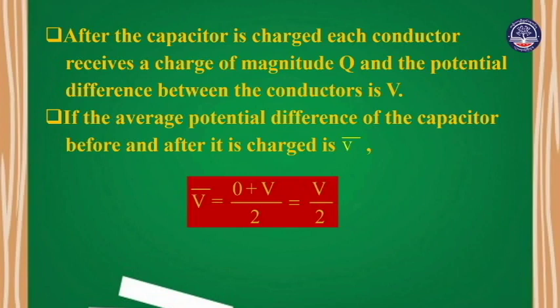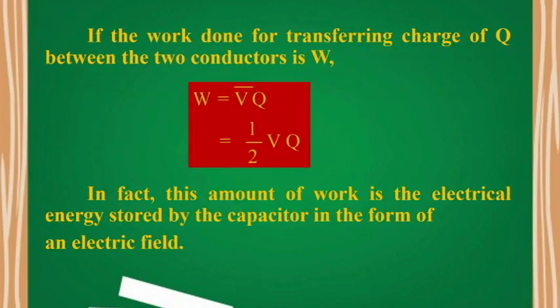The average potential difference is equal to 0 plus V, divided by 2, which equals V over 2. If the work done for transferring charge Q between the two plates is W, then W equals the average potential times charge, so W equals one-half times V times Q.